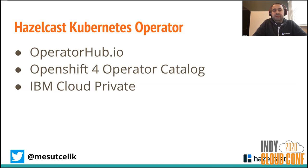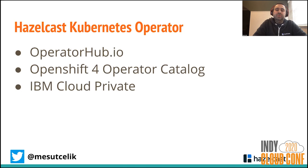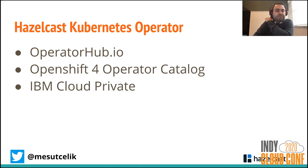Another way to deploy Hazelcast is via OperatorHub.io, and you can also use the Hazelcast operator in OpenShift and IBM Cloud Private. Along with the Helm chart, Hazelcast offers a Kubernetes Operator. The main difference is that the operator runs on the Kubernetes cluster and extends the Kubernetes API with CRDs, so you can deploy a Hazelcast cluster using just kubectl — without needing a Helm client installed.